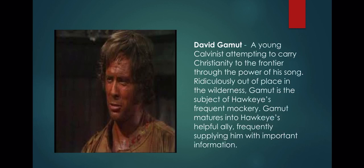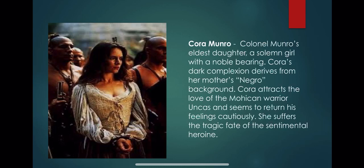Cora Monroe is Colonel Monroe's eldest daughter, dark-skinned with a noble bearing. Cora's dark complexion derives from her mother's Negro background. She attracts the love of the Mohican warrior Uncas and seems to return his feelings cautiously. She suffers the tragic fate typical of the sentimental heroine.